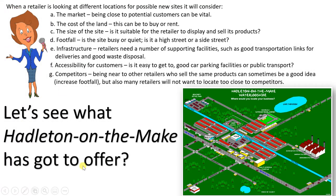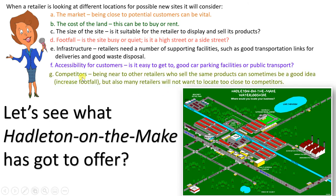When a retailer looks at different locations for possible new sites, it will consider these points A to G. A: the market — being close to potential customers can be vital. B: the cost of the land — to buy or rent. C: the size of the site — is it suitable to display and sell products? D: footfall — is the site busy or quiet, a high street or a side street? E: infrastructure — transportation links for deliveries and waste disposal. F: accessibility — easy to get to, good parking or public transport. G: competitors — being near retailers selling the same products can sometimes increase footfall, but many retailers won't want to be too close to competitors.